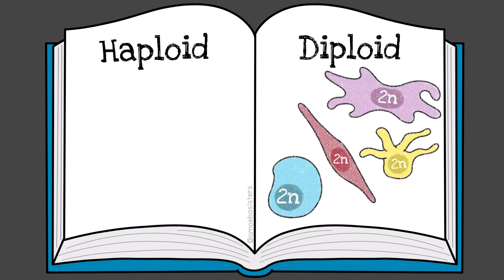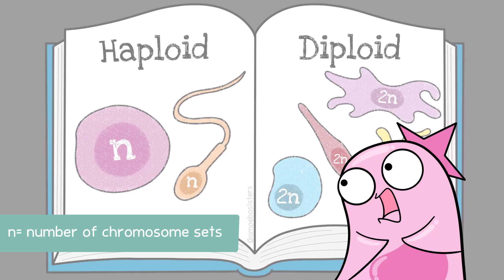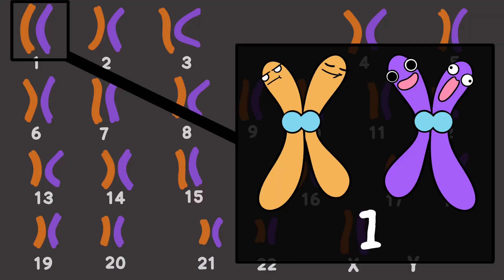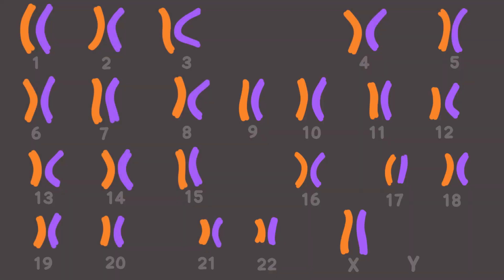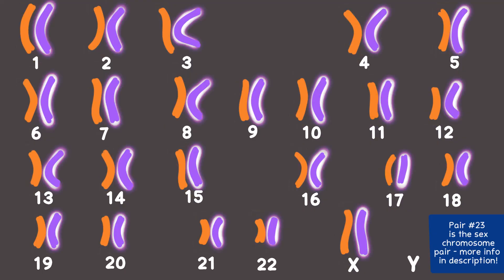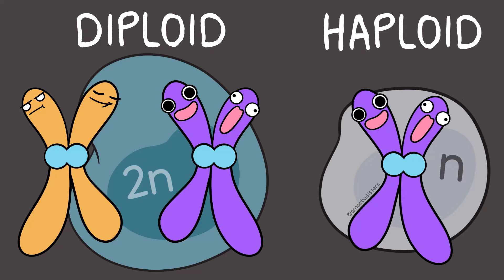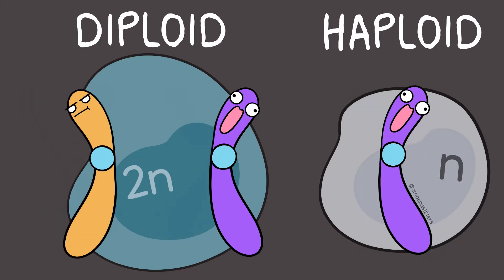This brings us to some important vocabulary words: haploid and diploid. Diploid cells have two chromosome sets; haploid cells have half of that — just one chromosome set. When we say two chromosome sets, we mean having two versions of each chromosome type. In most cases, if you saw a display of a person's chromosomes, you'd see 46 chromosomes but notice there are 23 types — one set of 23 from one parent, and one set of 23 from the other parent. A diploid cell has two versions of every chromosome type, one from each parent, making two chromosome sets. A haploid cell has only one version of each chromosome type, so just one chromosome set. This is true whether a chromosome is duplicated or not — duplication makes chromatids, but it doesn't change whether a cell is haploid or diploid.